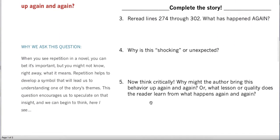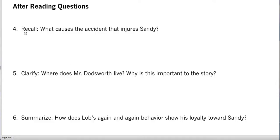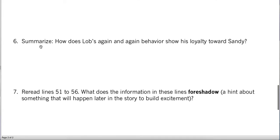Now you're going to pull up the story. You'll need to have the classroom page open. You're going to reread lines 274 to 302 — what happened again in those lines, and why was this shocking or unexpected? Then you're going to think critically: why might the author bring this behavior up again and again, or what lesson or quality does the reader learn from what happens again and again? After you've answered these, then you're going to answer the questions on the back of the page. Recall: what causes the accident that injures Sandy? Number five, clarify: where does Mr. Doddsworth live, and why is this important to the story? Number six, summarize: how does Lob's 'again and again' behavior show his loyalty towards Sandy?